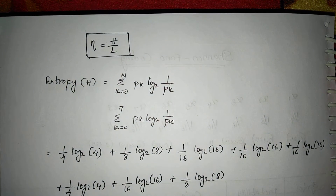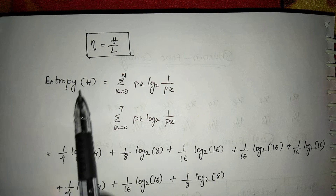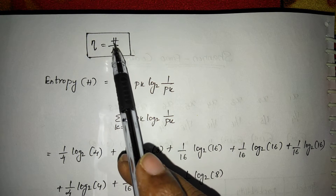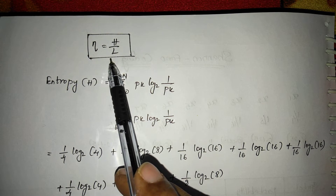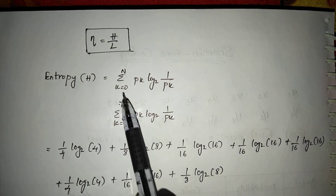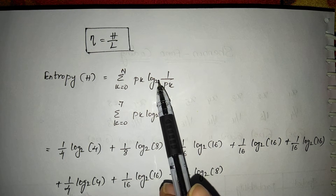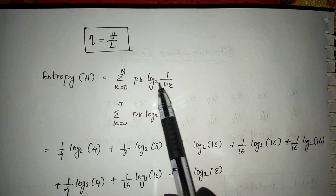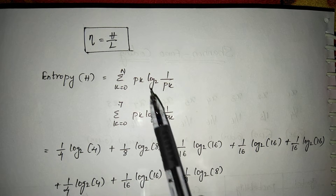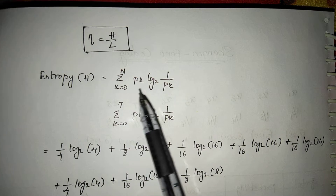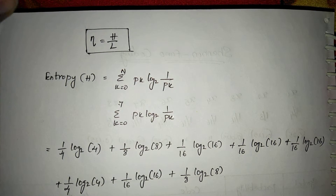Efficiency is calculated as a percentage: η = H / L, where η is efficiency, H is entropy, and L is average code length. The entropy formula is H = Σ (k=0 to n) p_k · log₂(1/p_k), where p_k is the probability. The log base 2 indicates we are working in binary. We have eight probabilities in this question, so k goes from 0 to 7.